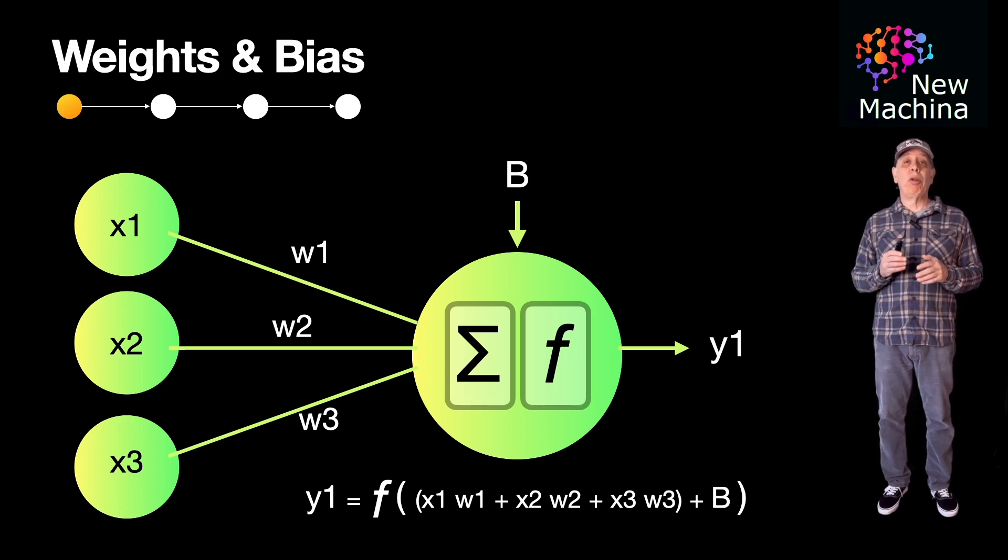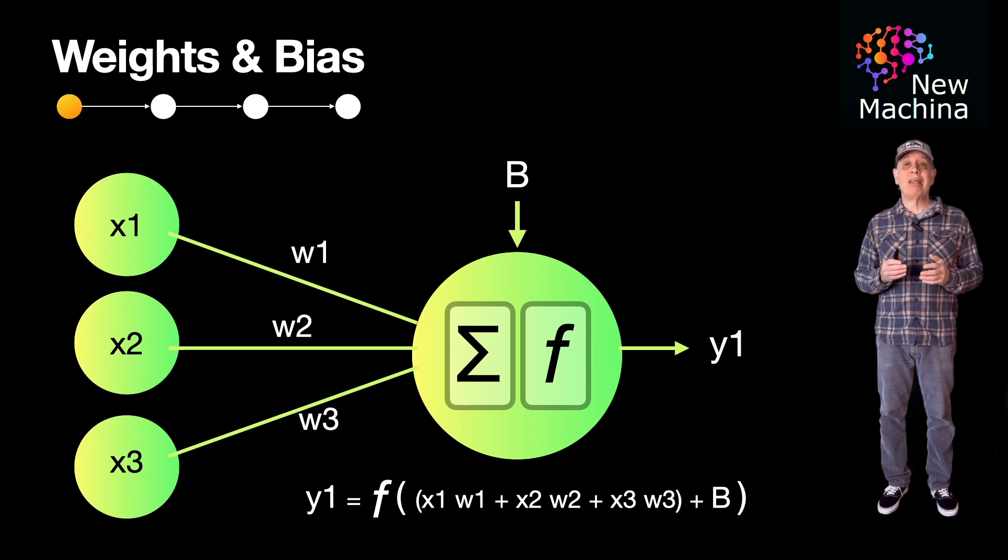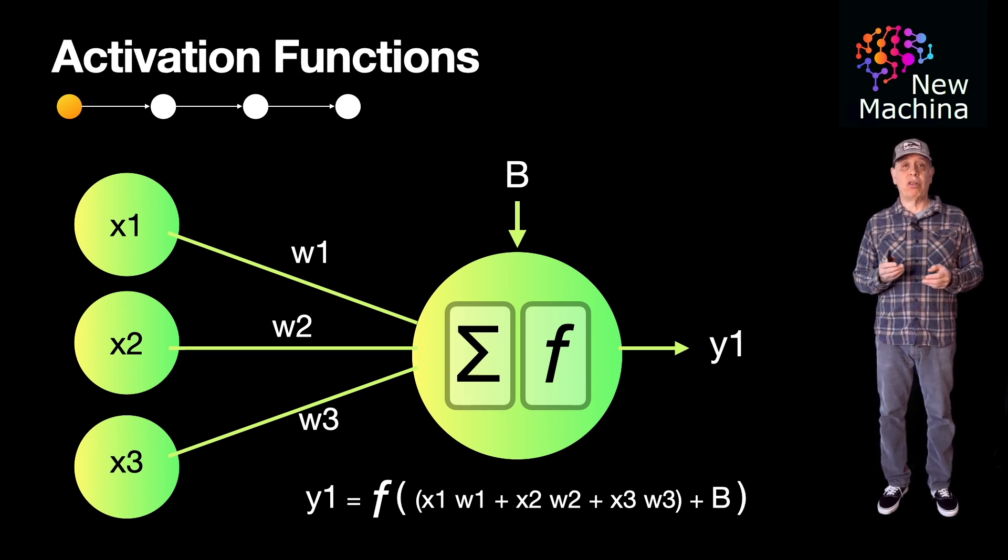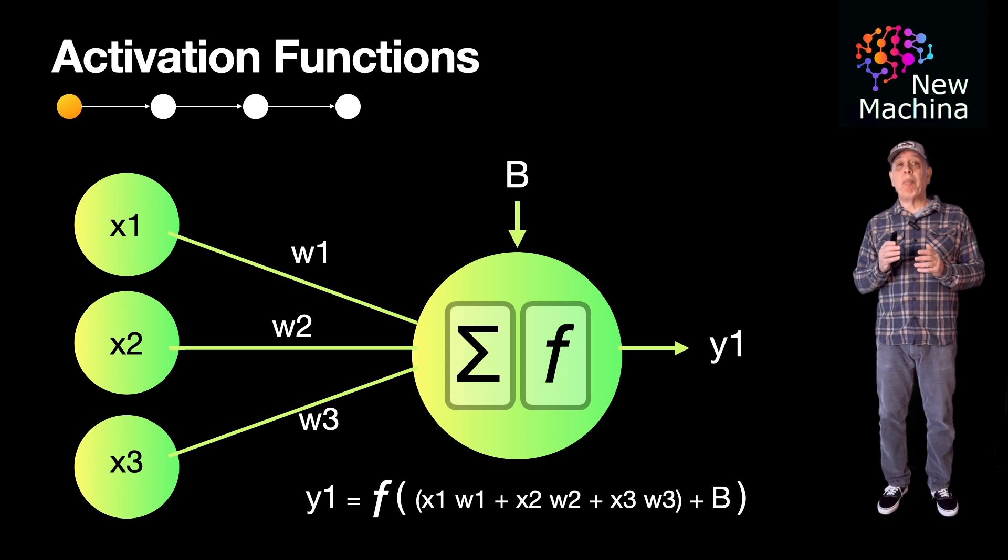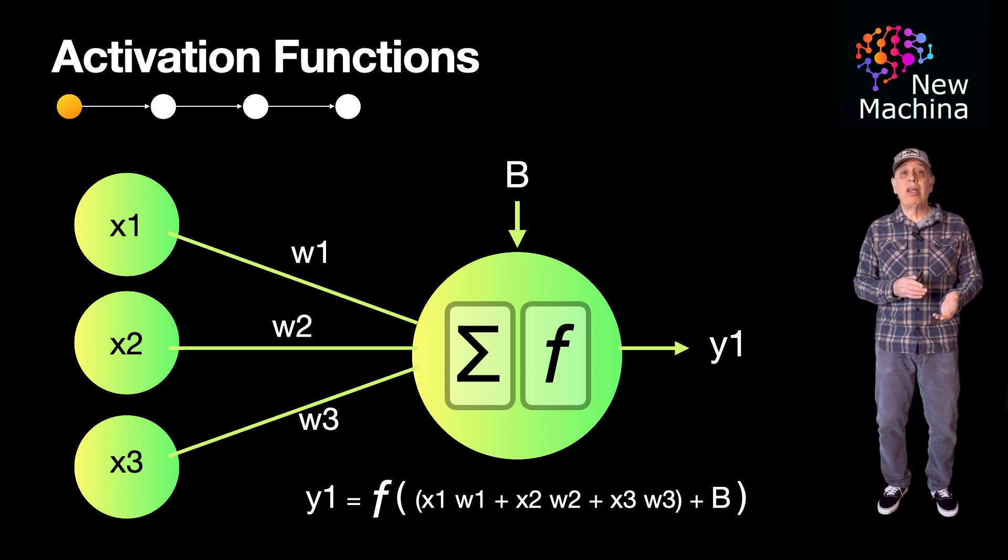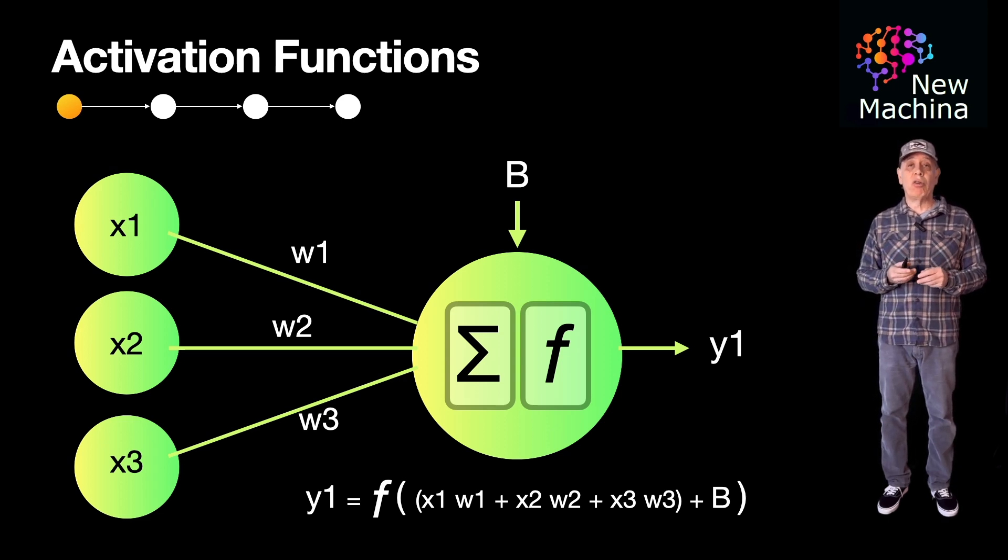Each neuron computes the weighted sum of all its inputs, adds a bias term, and applies an activation function. The bias helps the model shift the activation function to fit the data better. The activation function determines whether a neuron activates, passing its signal to the next layer in the artificial neural network.